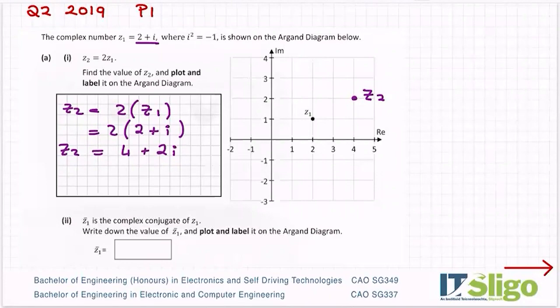Part 2: Z1 bar is the complex conjugate of Z1. Write down the value of Z1 bar and plot and label it on the Argand diagram. Now there's a reason they said write down, not calculate. The complex conjugate of a complex number is you change the sign of the imaginary part. That is it. So the real part doesn't change sign, it's just the imaginary part. So plus i there would become minus i. So the complex conjugate of Z1 is 2 minus i. And then to plot that, it's over 2 and it's down to minus 1i.